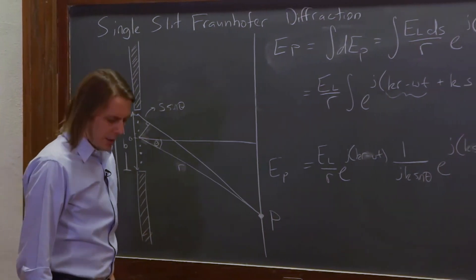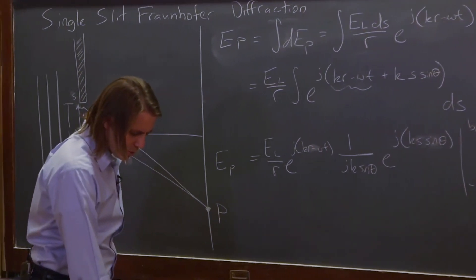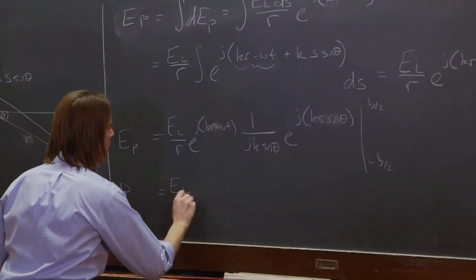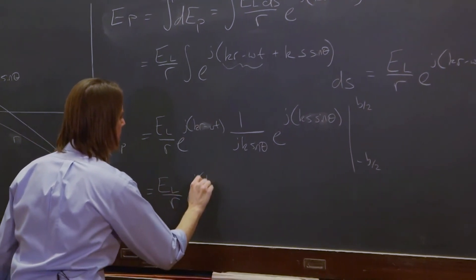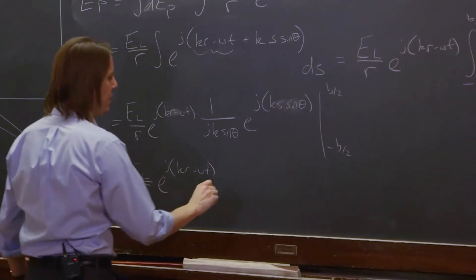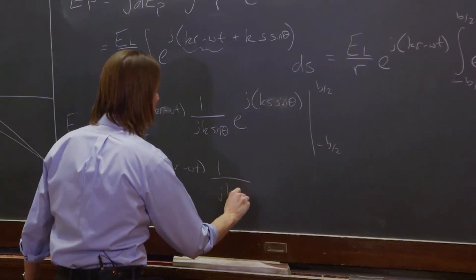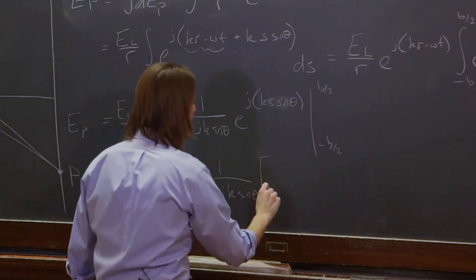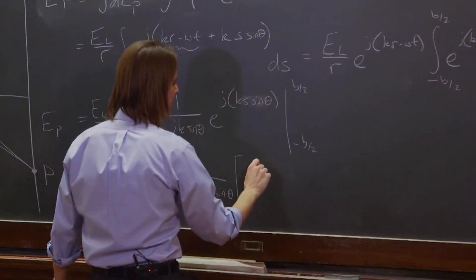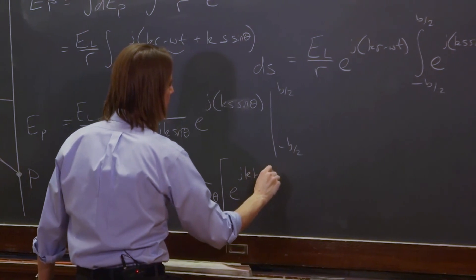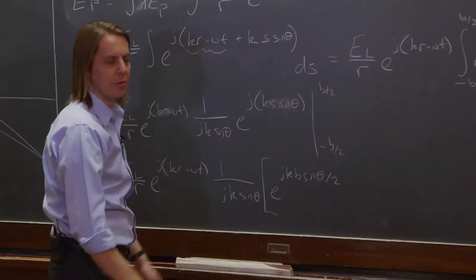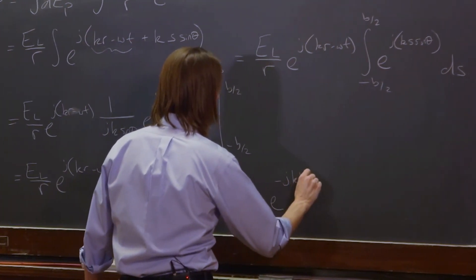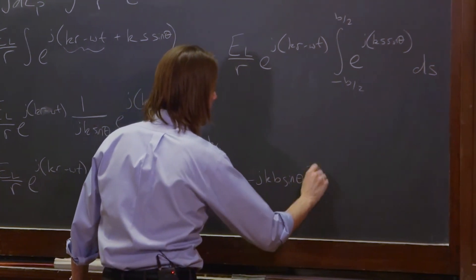Okay, then we can go ahead and evaluate it at the limits. This is equal to E_L over R, times E to the j(kR − ωt), times 1 over j·k·sinθ, and then we plug in B/2 for S: E to the j·k·B·sinθ/2, minus E to the minus j·k·B·sinθ/2.